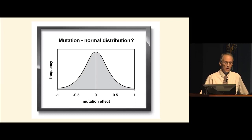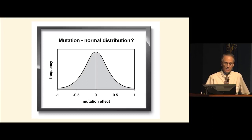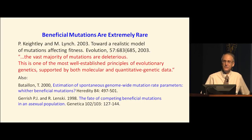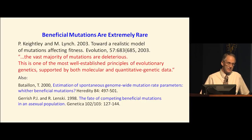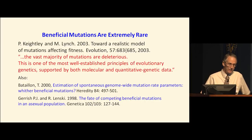The problem is we now know beyond any doubt that beneficial mutations are very rare, and that non-neutral mutations are consistently deleterious, as you'd expect from typographical changes in a text. Keightley and Lynch state: 'The vast majority of mutations are deleterious — this is one of the most well-established principles of evolutionary genetics, supported by both molecular and quantitative genetic data.' One paper argues that beneficial mutations are so rare we can't measure how rare they are. Gerrish and Lenski actually monitored sequence changes over time in bacterial populations and estimated one in a million mutations as beneficial.